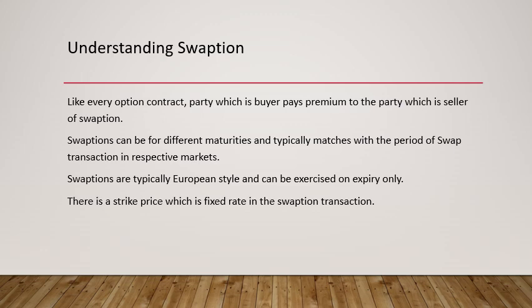Like every option contract, there are two parties — the buyer and the seller. The buyer pays the premium to the seller. Swaptions can be for different maturities — typically mapped to the swap contract — ranging from one month to a year or even up to ten years. In India, for instance, you have MIBOR OIS swaps happening for a one-month period going up to ten years. Swaptions are typically European style, meaning they can be exercised only on expiry, and the strike price is the fixed rate in the swaption contract.